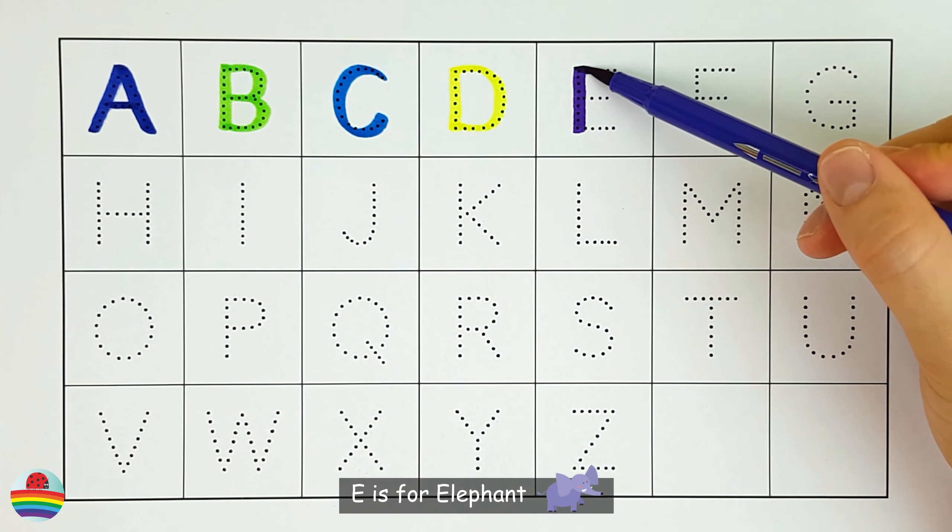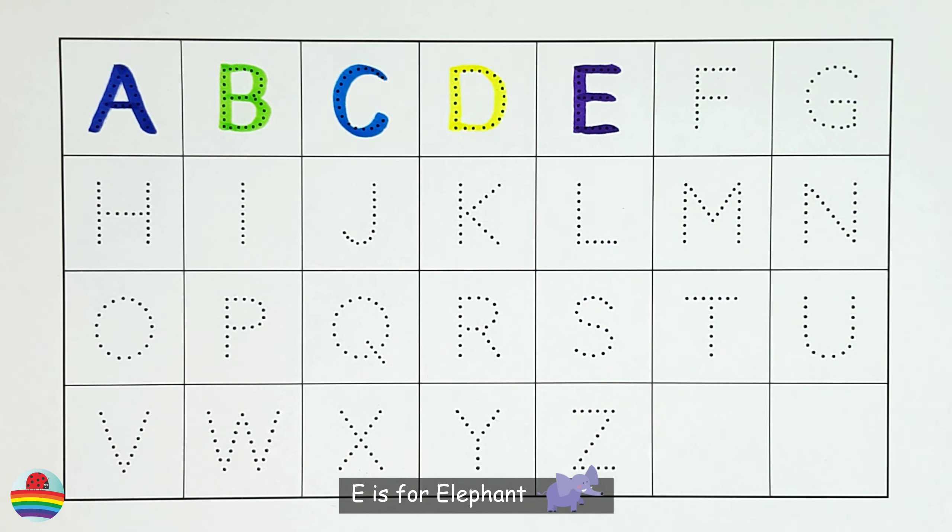E. E is for elephant. E. F. F is for flamingo. F.